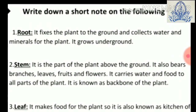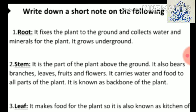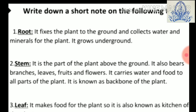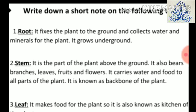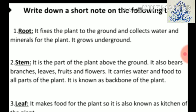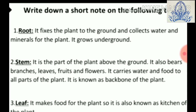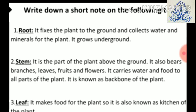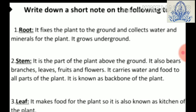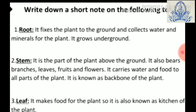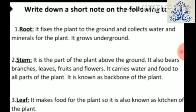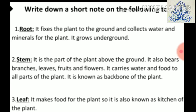Now write down the heading: Short Notes. First — root: it fixes the plant to the ground and collects water and minerals for the plant; it grows underground. Second — stem: it is the part of the plant above the ground; it bears branches, leaves, fruits and flowers; it carries water and food to all parts of the plant and is known as the backbone of the plant.